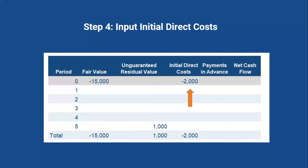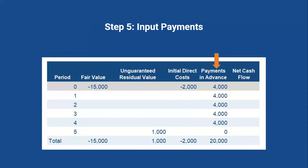Now we have our input of initial direct costs. The initial direct costs are costs incurred by the lessor to get into the lease that wouldn't have been incurred otherwise. The initial direct costs are a cash outflow — a negative value — for the lessor, so they're going to input that as negative $2,000. This occurred before the lease started, so it goes into period zero as the initial direct costs of the lessor to get the lease going.